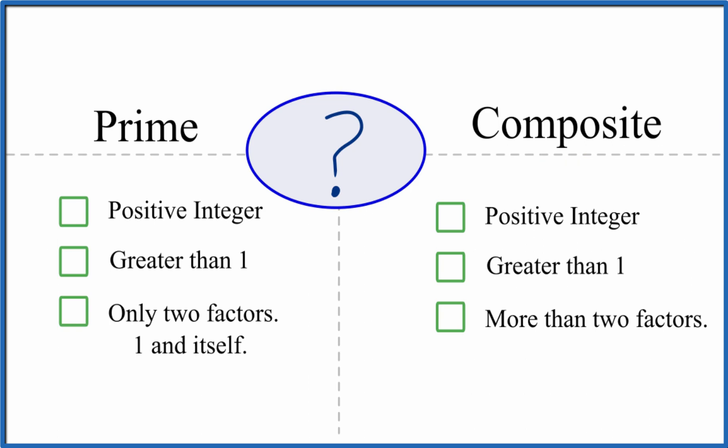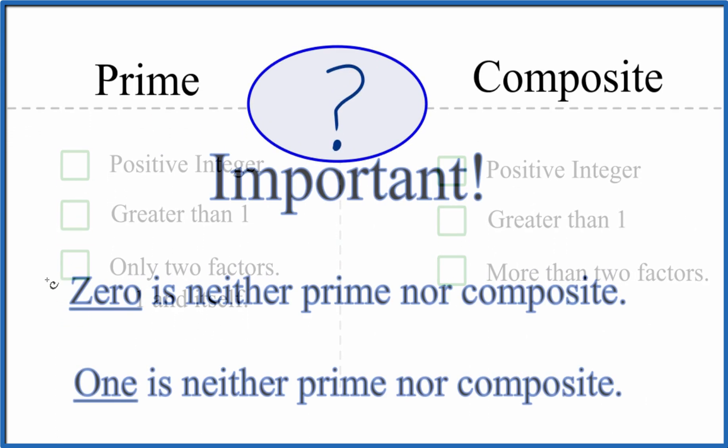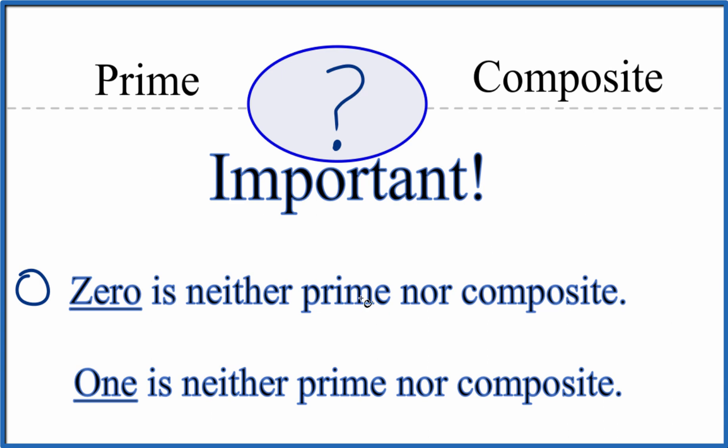First off, one thing you need to know is that zero is not prime or composite, and one we don't consider prime or composite either. So just remember zero and one, they're not prime numbers or composite numbers.